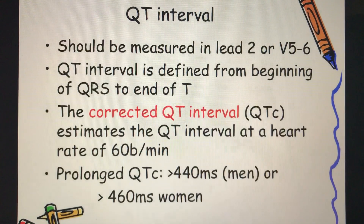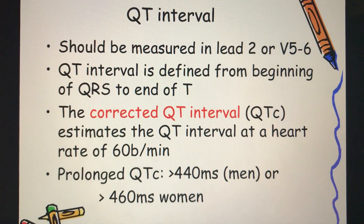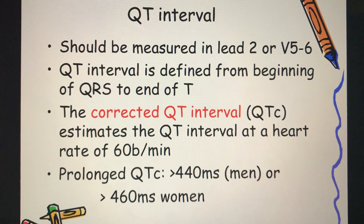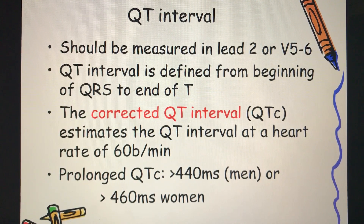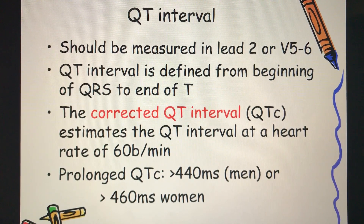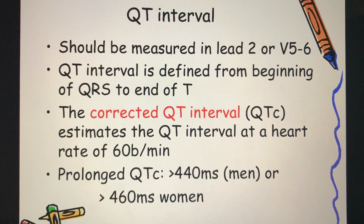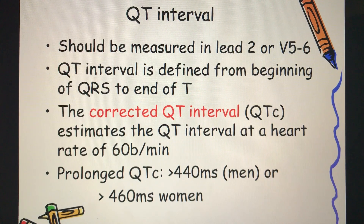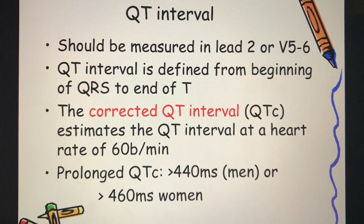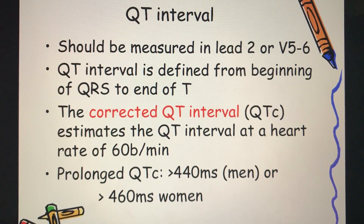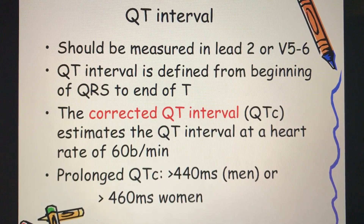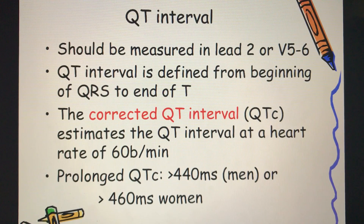The QT interval should ideally be measured in lead II or leads V5 and V6. The QT interval is defined from the beginning of the QRS to the end of the T wave. There is an entity called the corrected QT interval, which estimates the QT interval at a heart rate of 60 beats per minute.